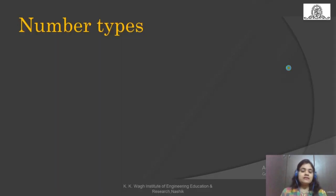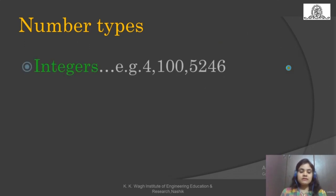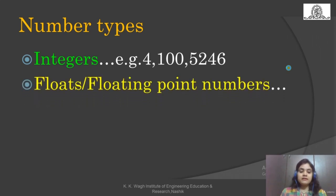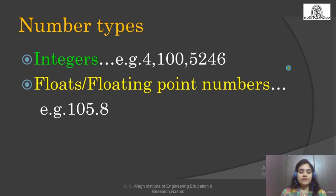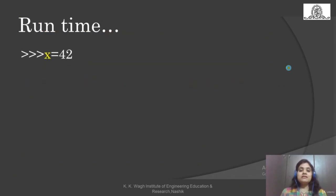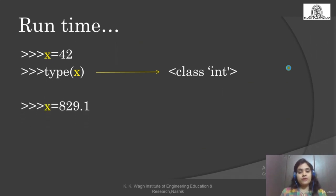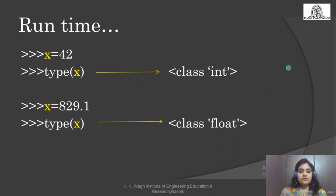First of all, let us see number types. There are two types: the first is integer — for example 4, 100, 5, 2, 6 — these are whole numbers. The second type is floating point numbers or floats — for example 105.8, which has a decimal point. If x = 42, type(x) returns 'class int'. If x = 829.1, its type is float. You can also use the value directly: type(100.5) returns 'class float'.